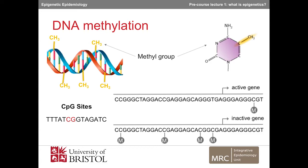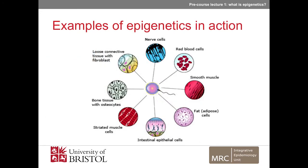Here are some examples of epigenetics in action. Firstly, we know that epigenetic mechanisms, especially DNA methylation, play a huge role in cell differentiation. Each of your cells has the same DNA — the same genotype — but although they have the same DNA, they don't all do the same thing with it. Epigenetic mechanisms can tell cells what to do with the DNA, i.e. which genes to switch on and which to switch off. The genes chosen to be expressed in a cell define the function of that cell, so a nerve cell will have different epigenetic modifications compared to a muscle cell or a fat cell.